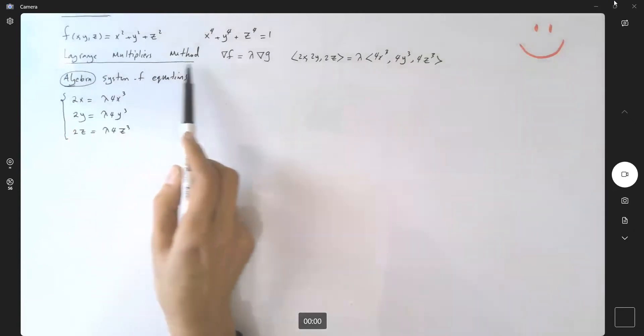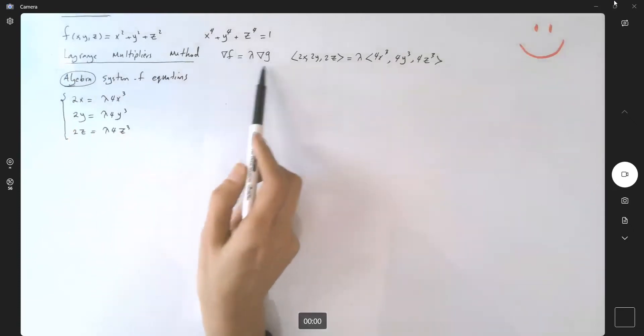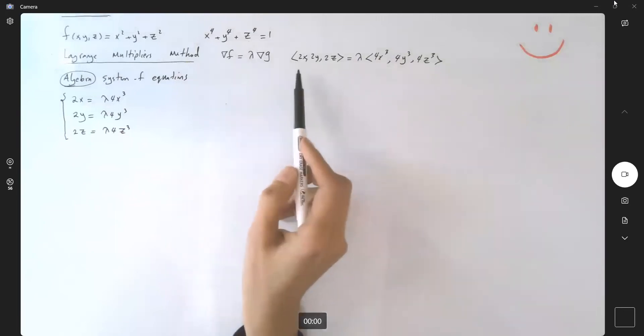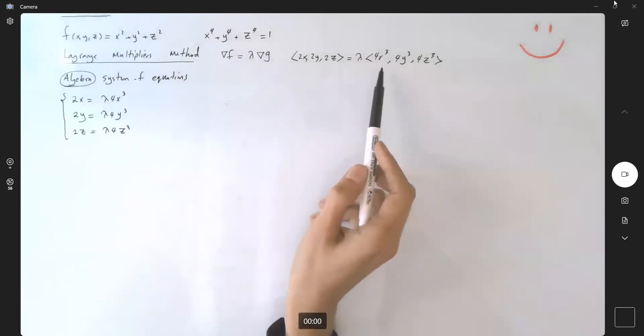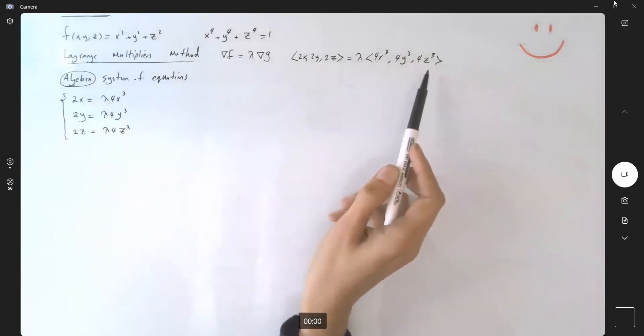We're going to apply the Lagrange multipliers method. We find the gradient of f and set it equal to lambda times the gradient of g, or the vector (2x, 2y, 2z) equals lambda times (4x³, 4y³, 4z³).